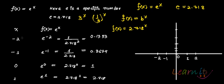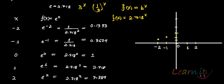You will need a calculator for this. When x = -2, e^(-2) = 1/(2.718)^2 ≈ 0.1353. When x = -1, it is 1/2.718 ≈ 0.367. When x = 0, e^0 = 1 — a general characteristic that exponential functions always pass through (0, 1). When x = 1, the value is 2.718, and when x = 2, it is 2.718^2 ≈ 7.389.